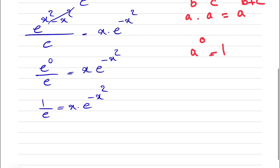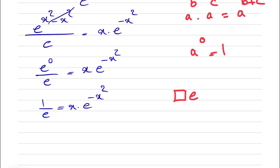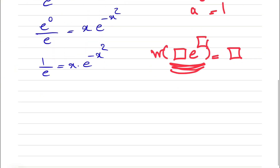As I mentioned at the beginning, we are trying to use the Lambert W function. For the Lambert W function, what we need is a box times e to the power of that box. And once we apply the Lambert W function, the answer will be the box. So this is what we're trying to build here, and if we look at the right side of the equation, we'll see that we are getting close to it.